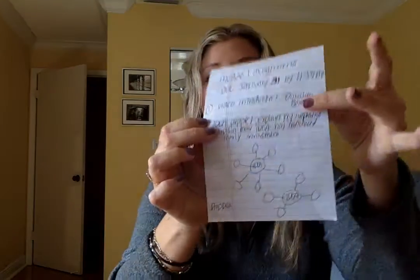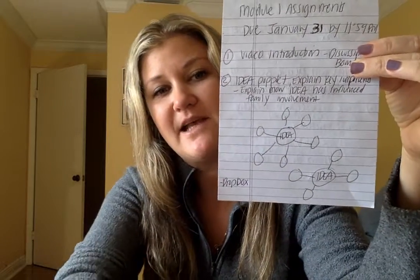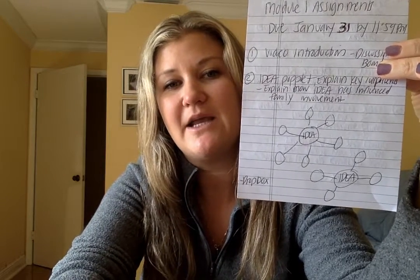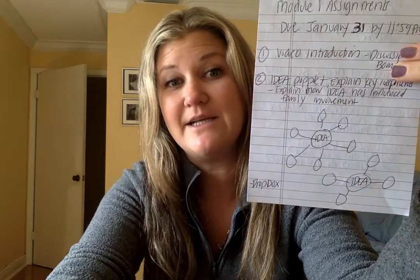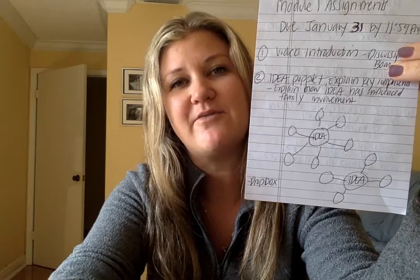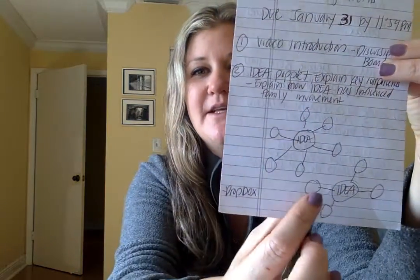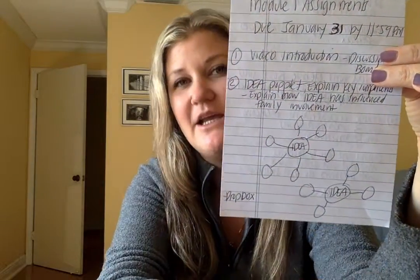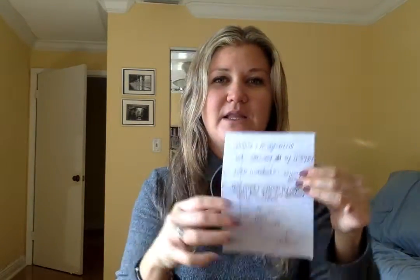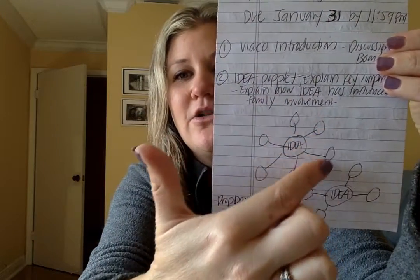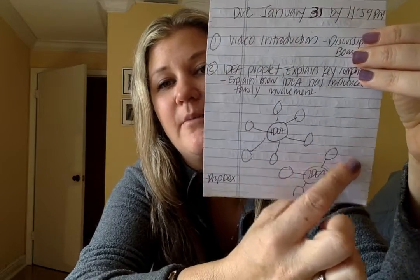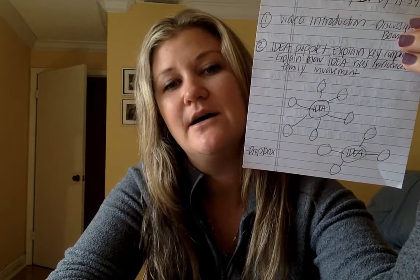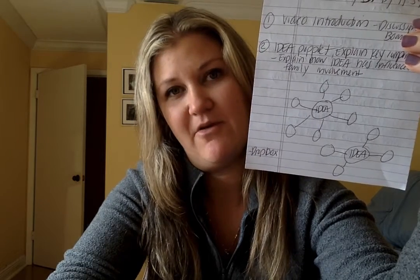For assignment two, I'm asking that you create a poplet. For this assignment, you are going to explain your understanding of the key components of the Individuals with Disabilities Education Act, or IDEA, and also how IDEA has influenced family involvement in special education. This is a rough drawing of what your poplet would look like — it's a concept map, so your concept, IDEA, is going to be in the middle, and then all along the outside you're going to have the key components. There are six of them. Then you're going to have another poplet addressing how IDEA has impacted family involvement in special education.